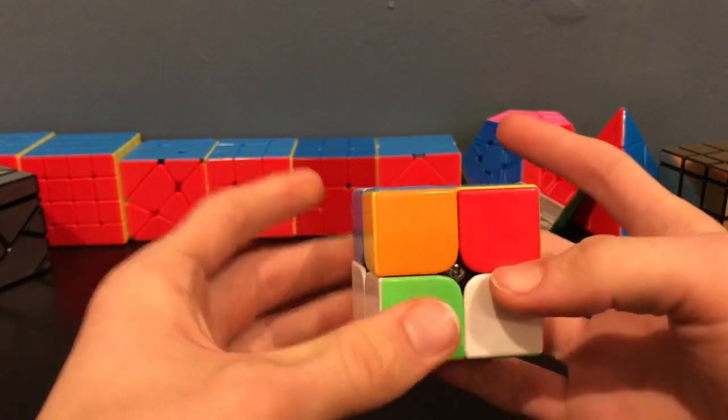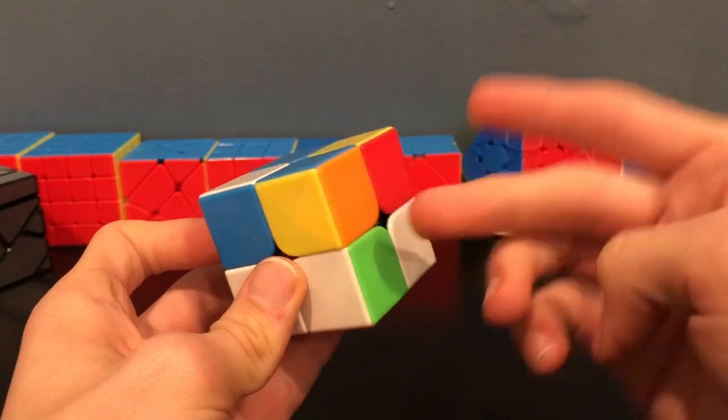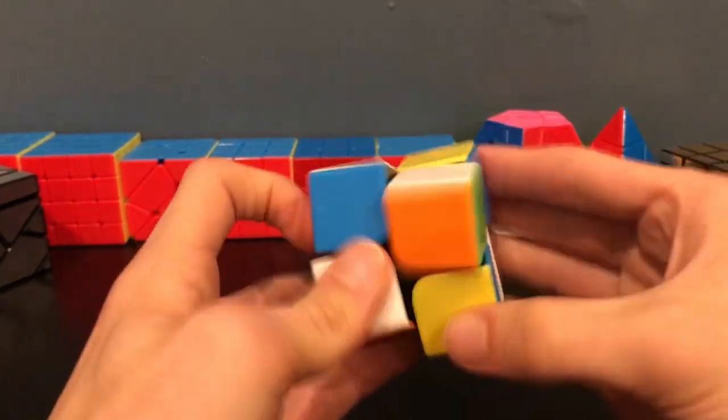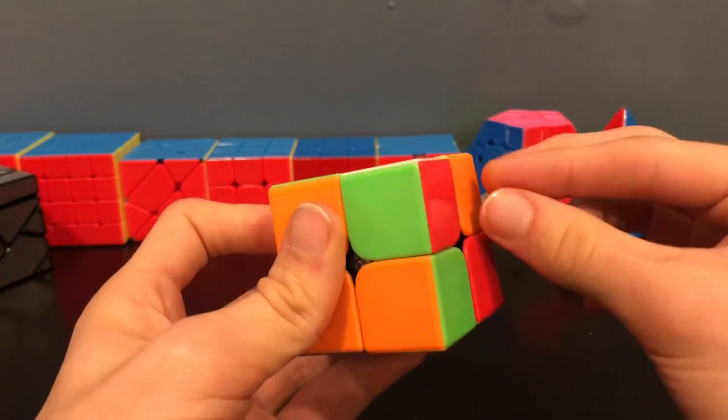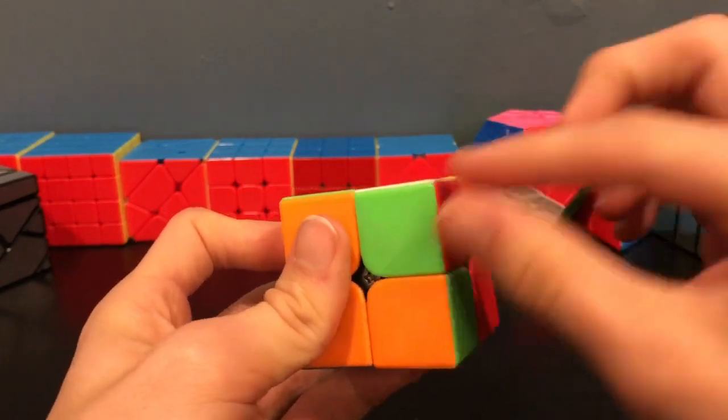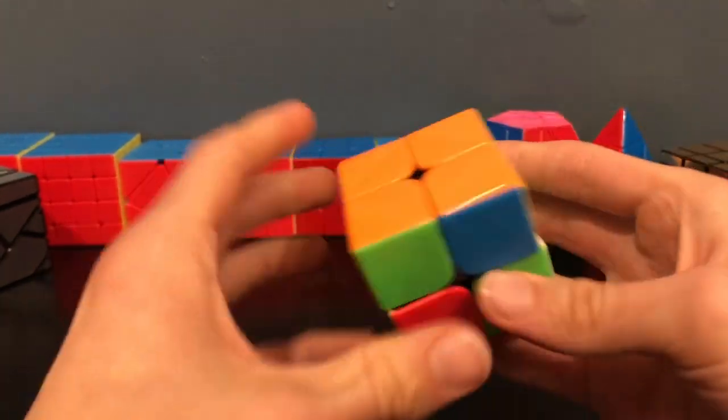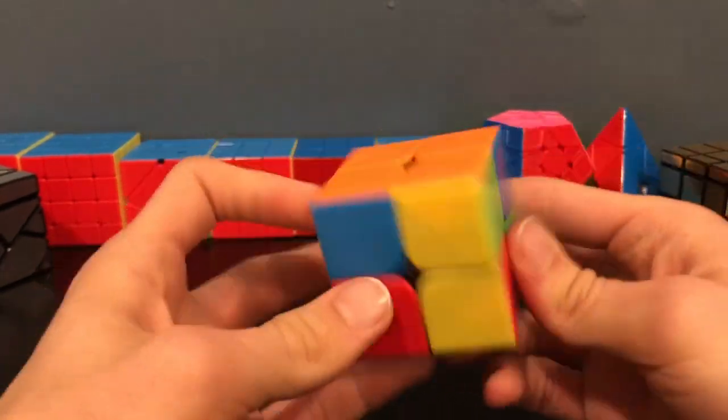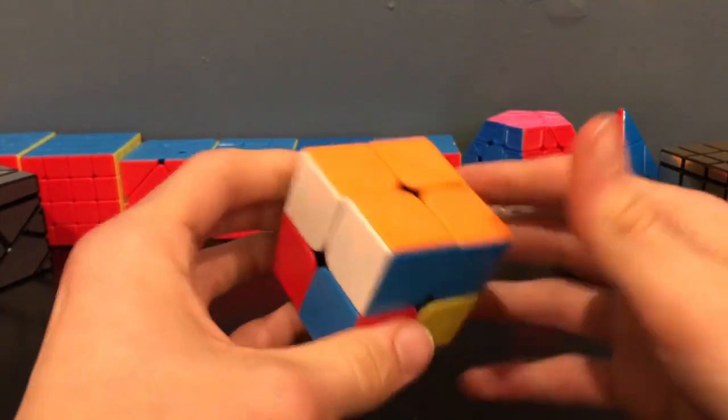Now for the last orange piece, we will have to do multiple T-PERMs to get it into place. First, I will just switch these two pieces so that the orange piece will be a little bit closer. Now that it's here, I will just visualize how I will get the orange tile here. Now that I have all the pieces on one side, I will just do one more T-PERM algorithm to permutate the first layer.